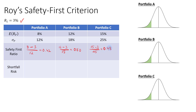Based on Roy's Safety First Criterion, to determine the safety first optimal portfolio we look for the portfolio with the highest Safety First Ratio. That is Portfolio B with an SFR of 0.5. We can therefore conclude that Portfolio B will have the minimum shortfall risk.